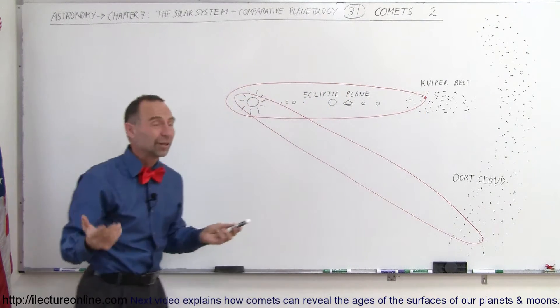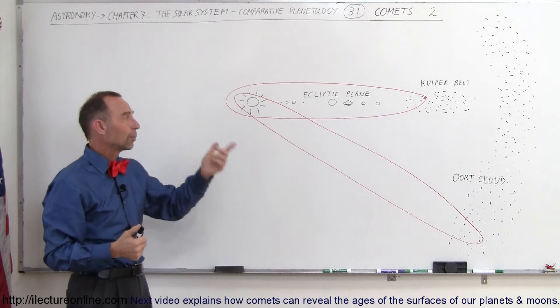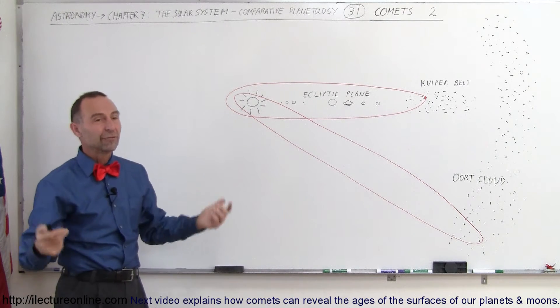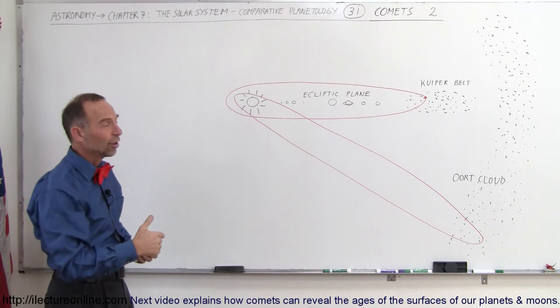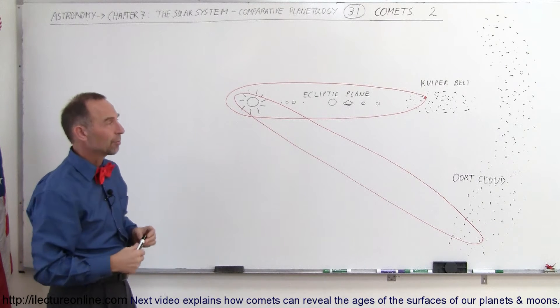So the period that it takes for one of those comets to make one trip around the Sun can be anywhere from 50 to 100 years to as much as several thousand years before they come back.